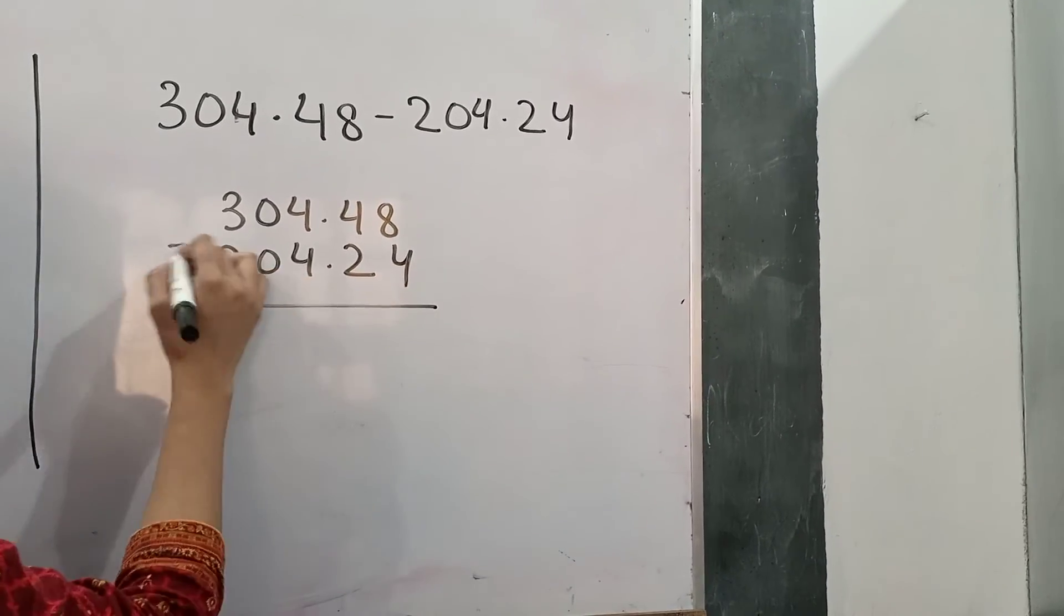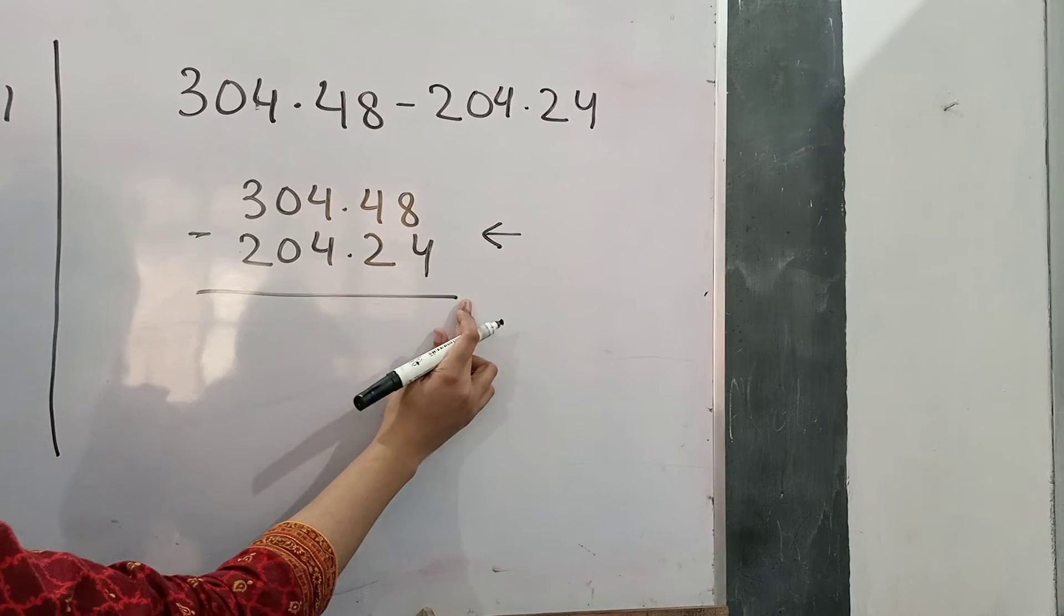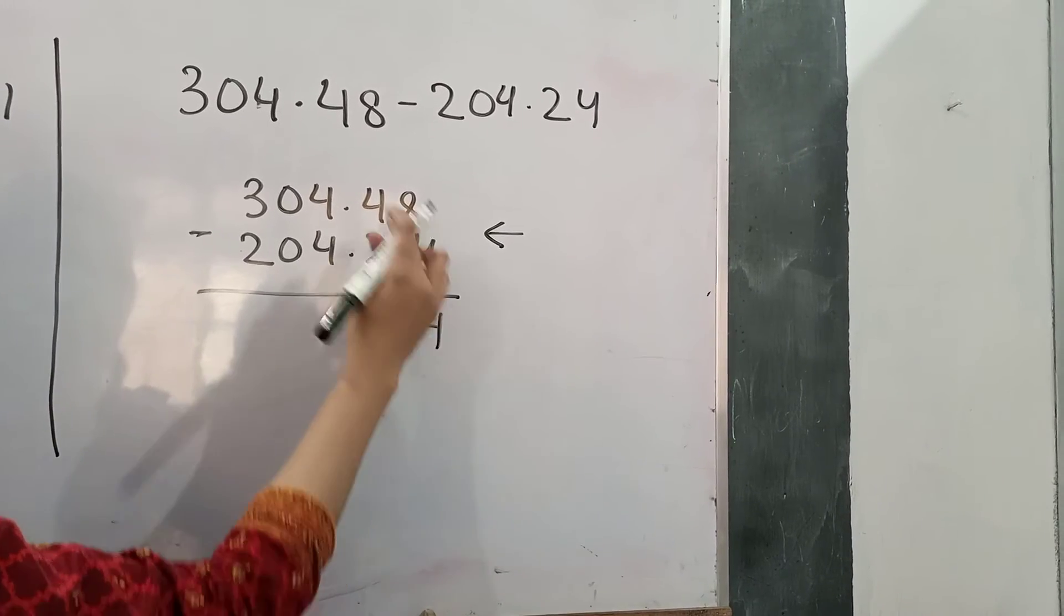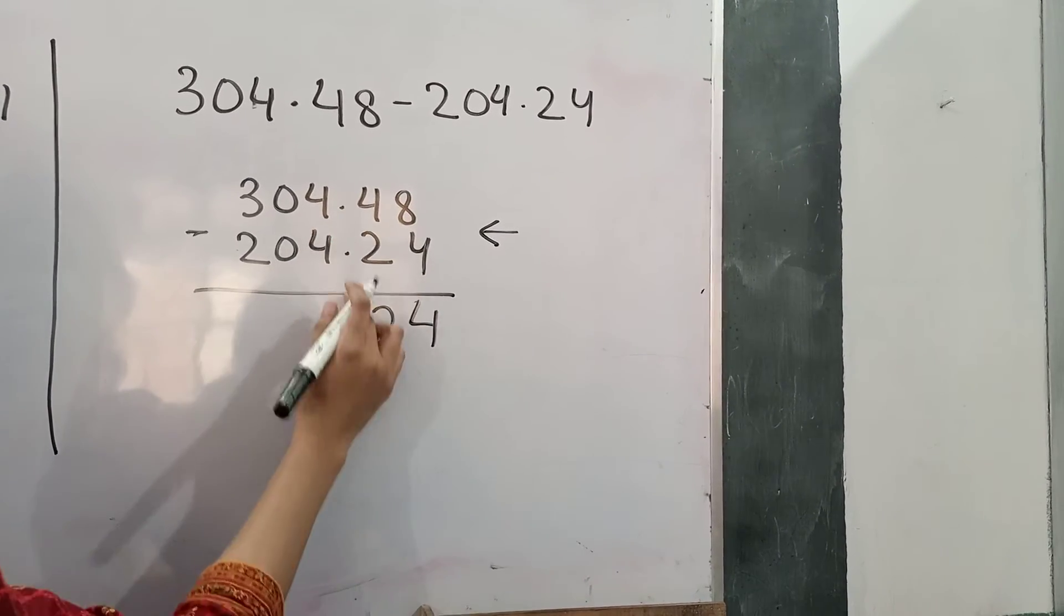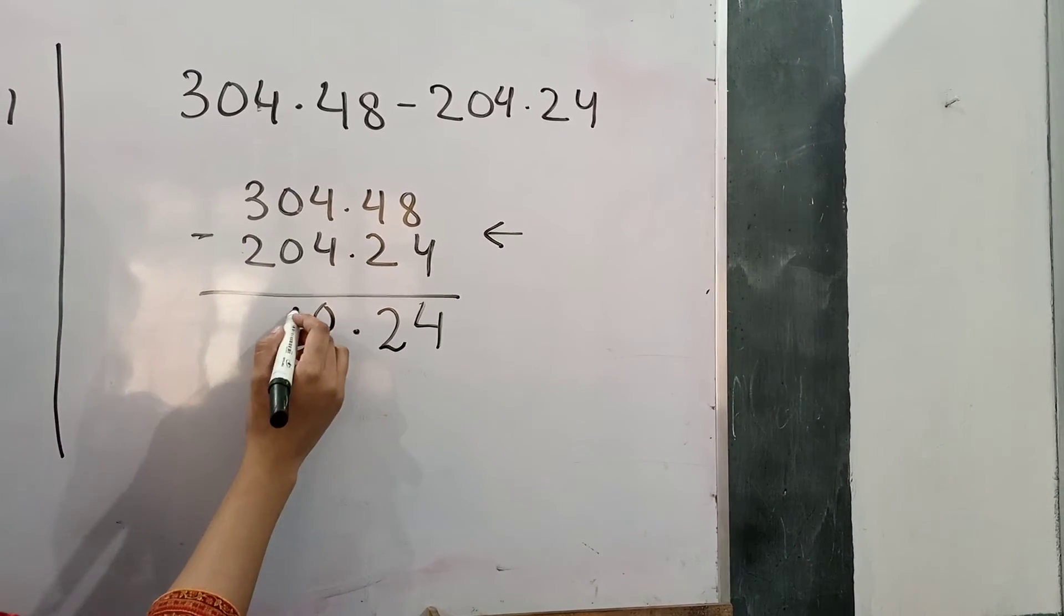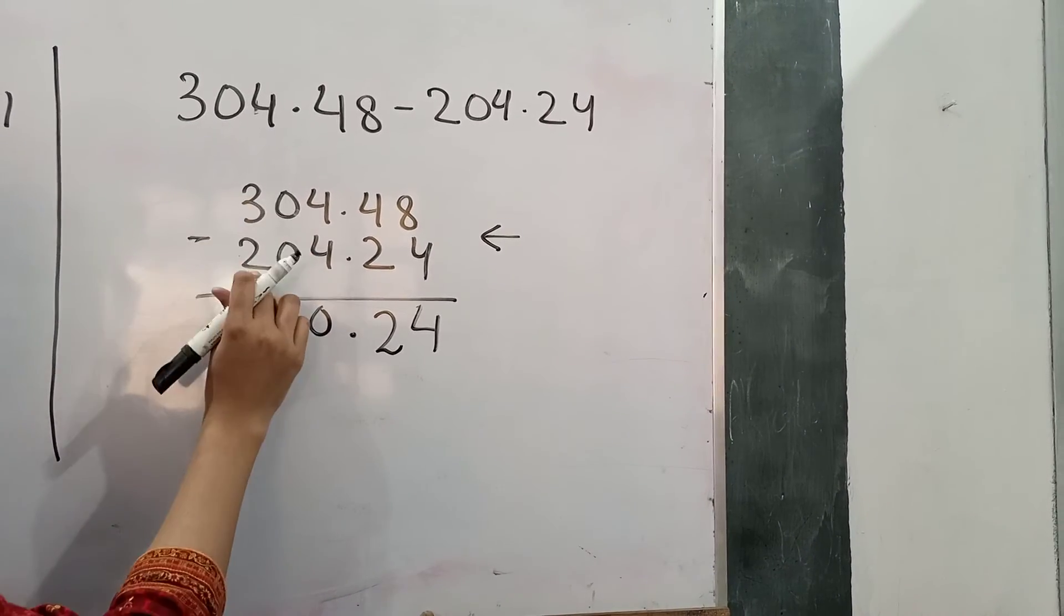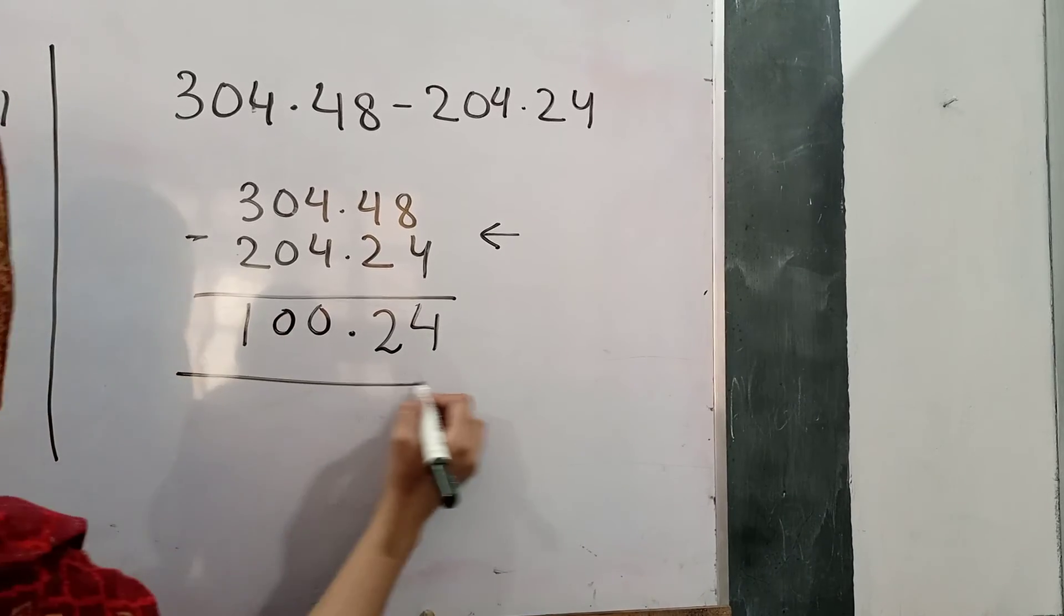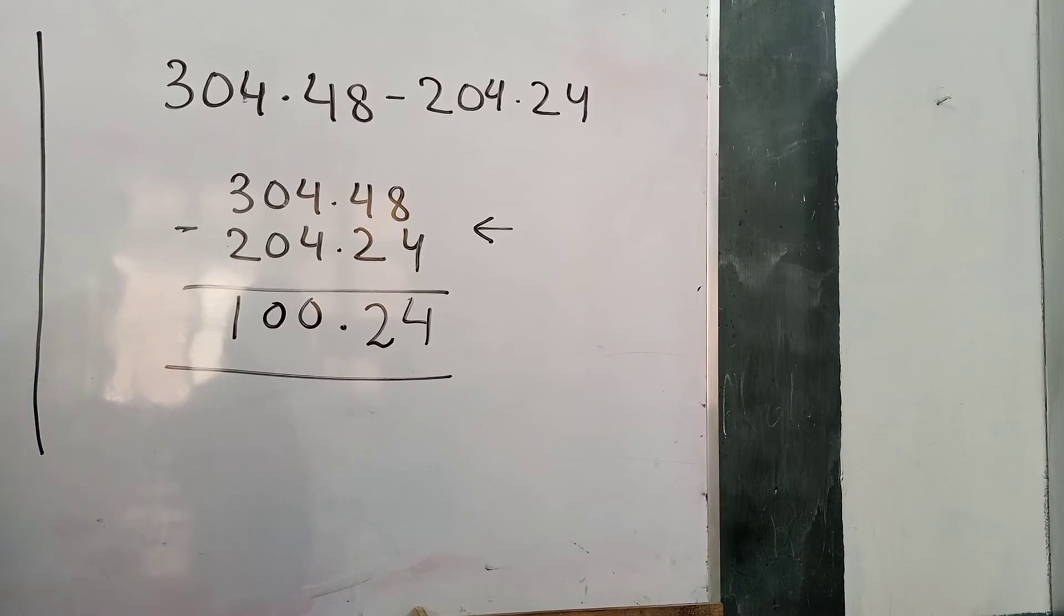Yes, now we will start subtraction from this side. 8 minus 4, 4. 4 minus 2, 2. Point below point. 4 minus 4, 0. 0 minus 0, 0. 3 minus 2, 1. So, answer is 100.24.